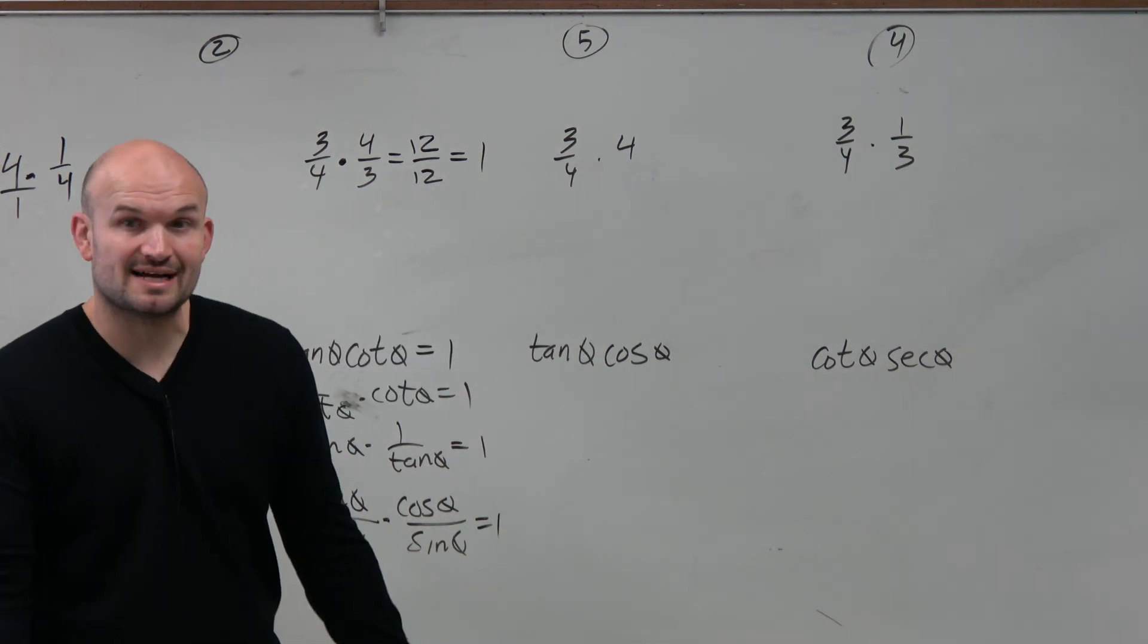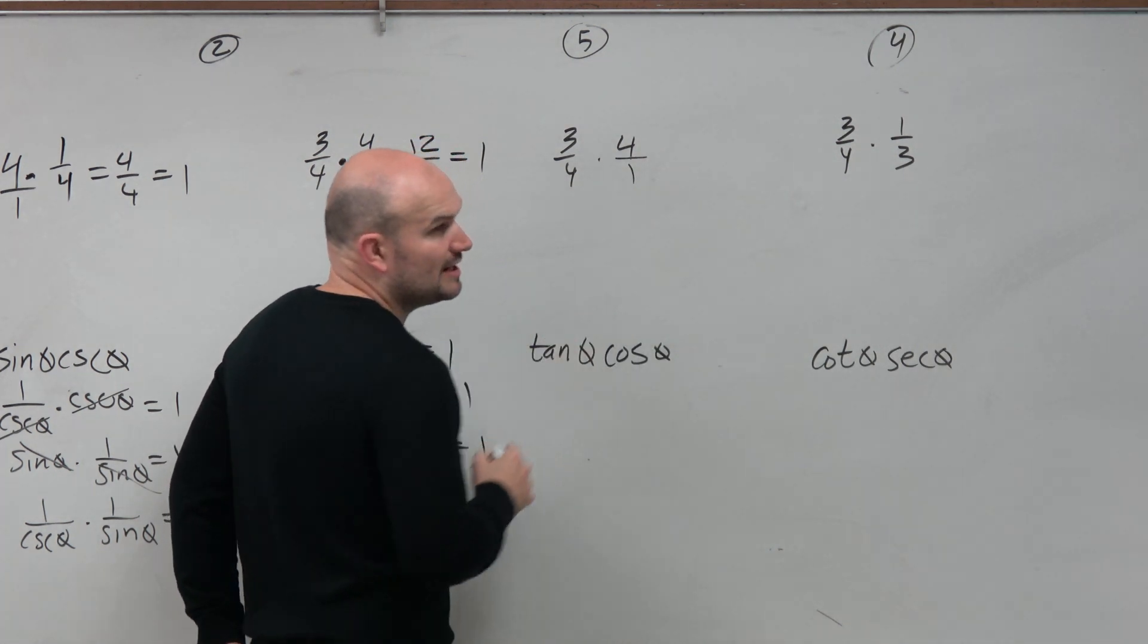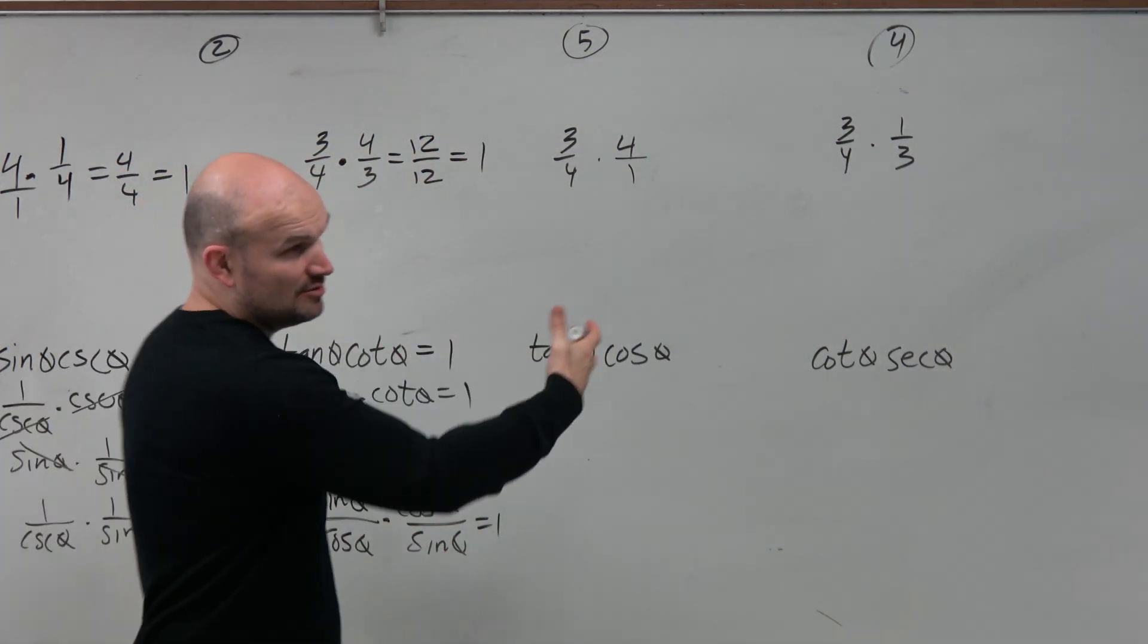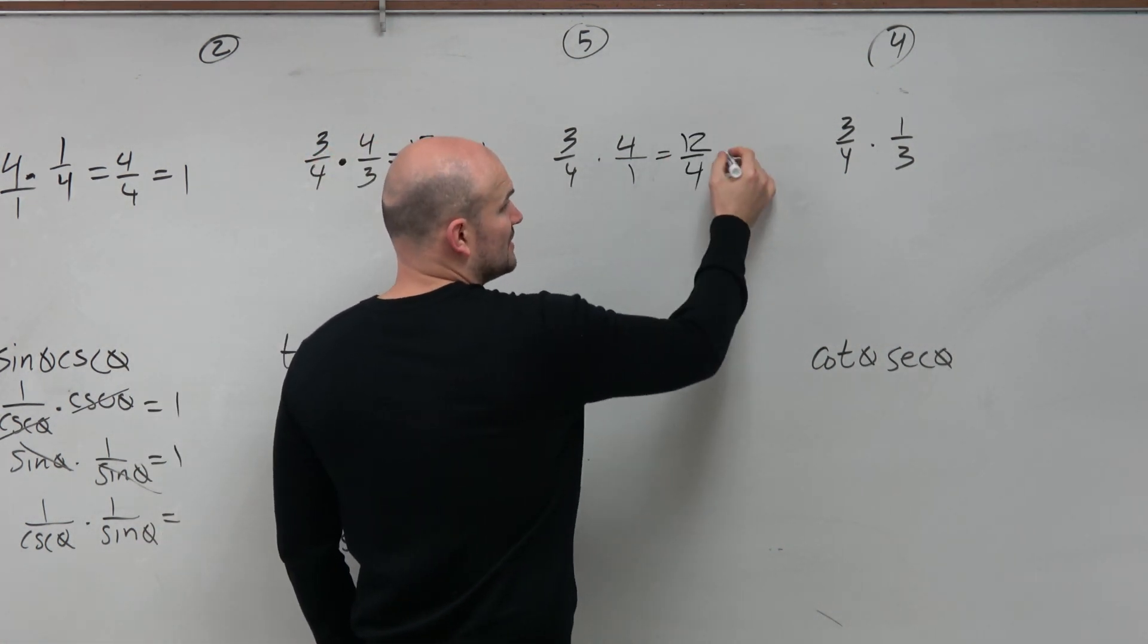So let's look at the next one. The next one is 3 fourths times 4. When you're trying to do operations with integers and fractions, just make sure you write your integer as a fraction. Multiplication is rather simple. You multiply straight across, and then obviously we can divide one more time.